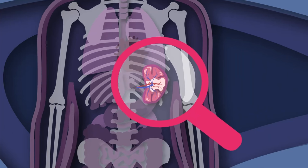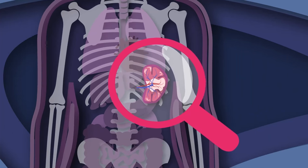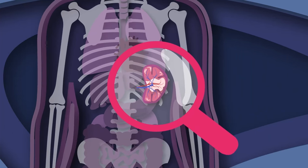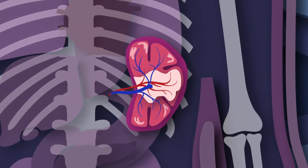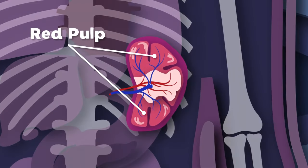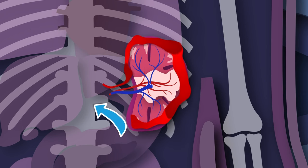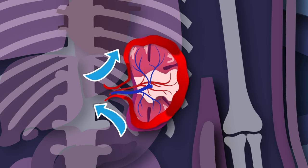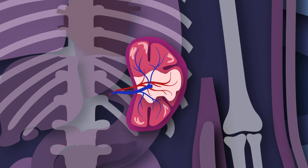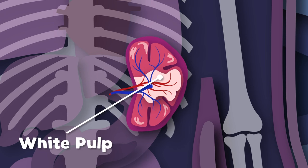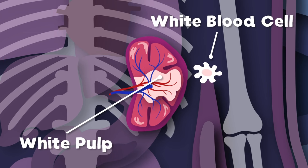Let's take a look inside the spleen to learn more of its parts. There are two main types of tissue in me, and that's where we'll start. The first main tissue is called the red pulp — it filters blood of antigens, microorganisms, and defective red blood cells. The second main tissue is called white pulp — it's part of the immune system, mainly made up of white blood cells.